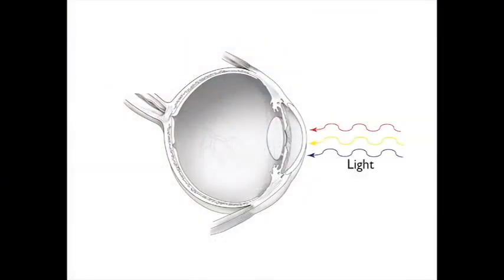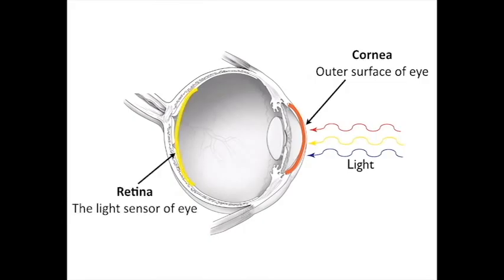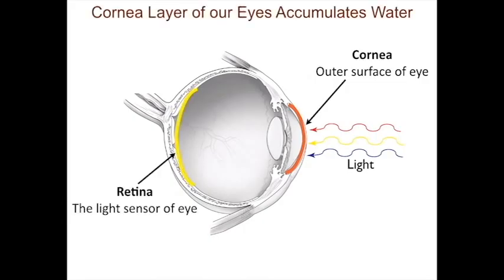At the back of the eye are the photoreceptors called the retina. We're going to be talking about problems that occur in the cornea, specifically what happens when water accumulates in the cornea. If we consider a cross-section of the human eye, the cornea is made up of multiple different layers.